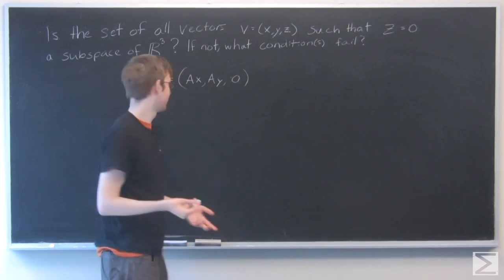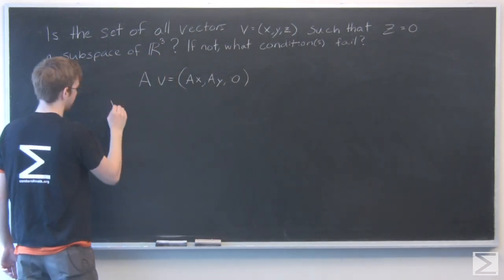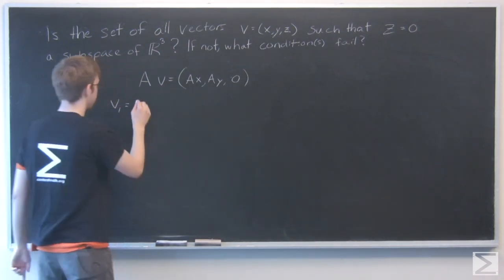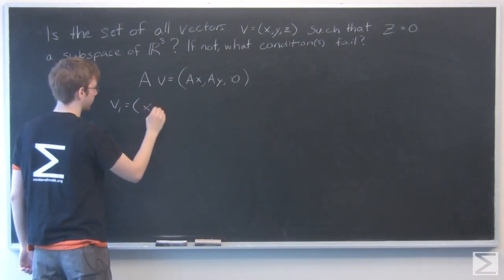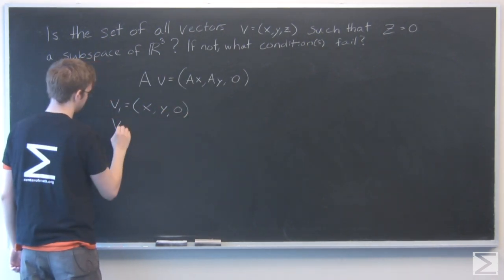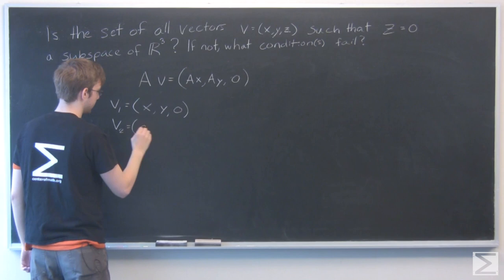Now let's try addition. I'm going to define two vectors that are part of this set. So v1 is going to be x, y, and 0, and v2 is going to be a, b, 0.